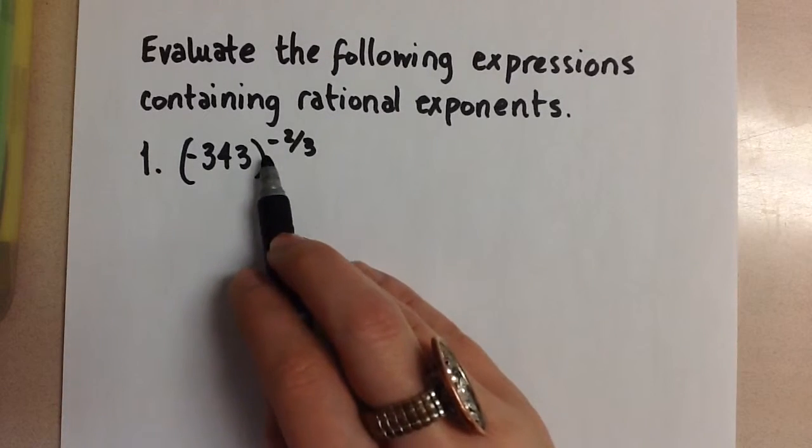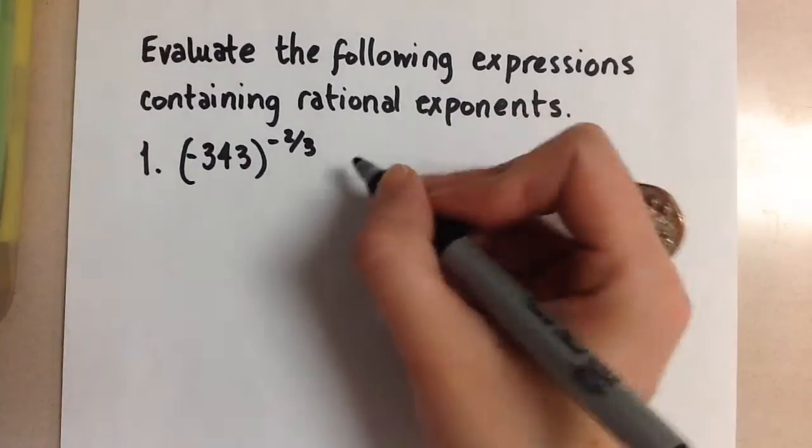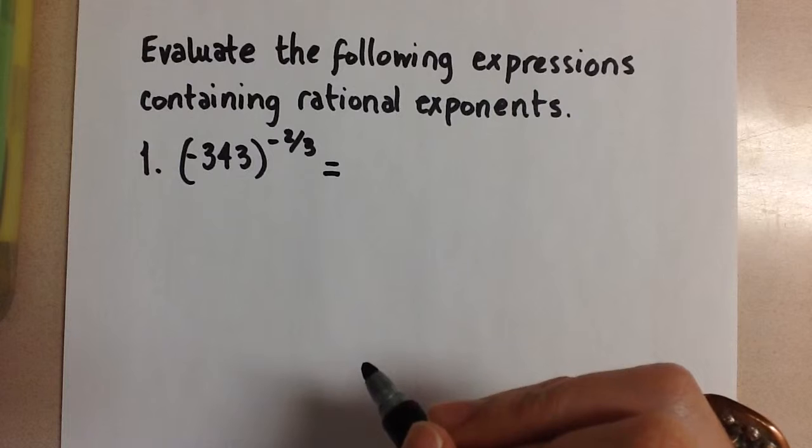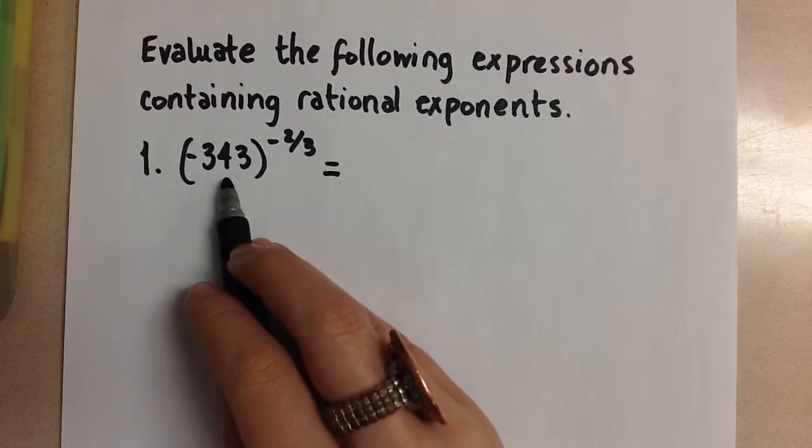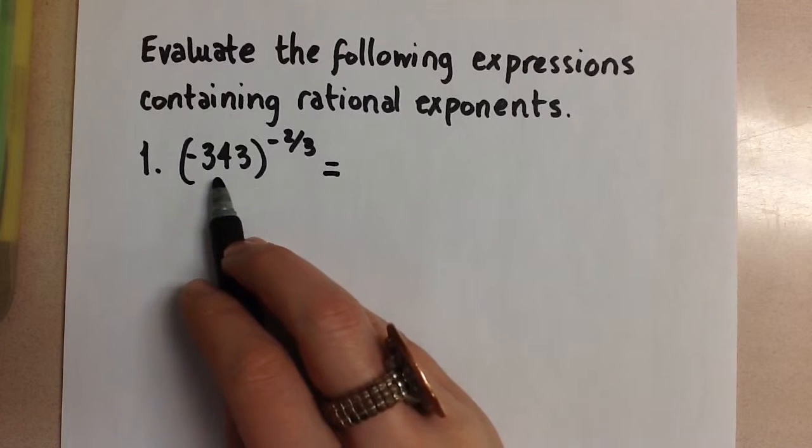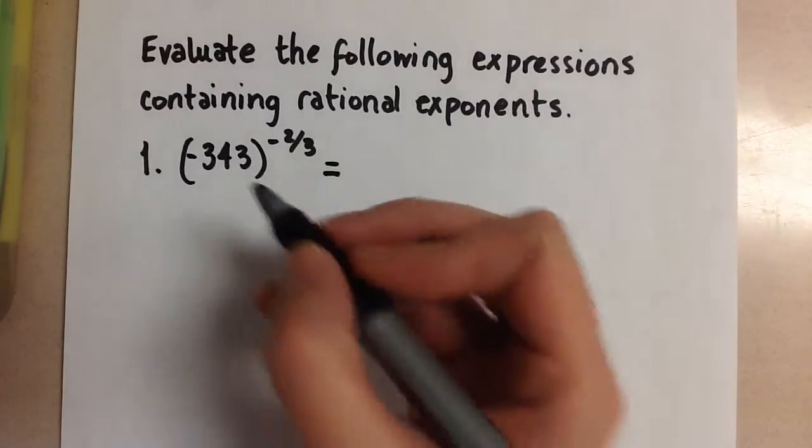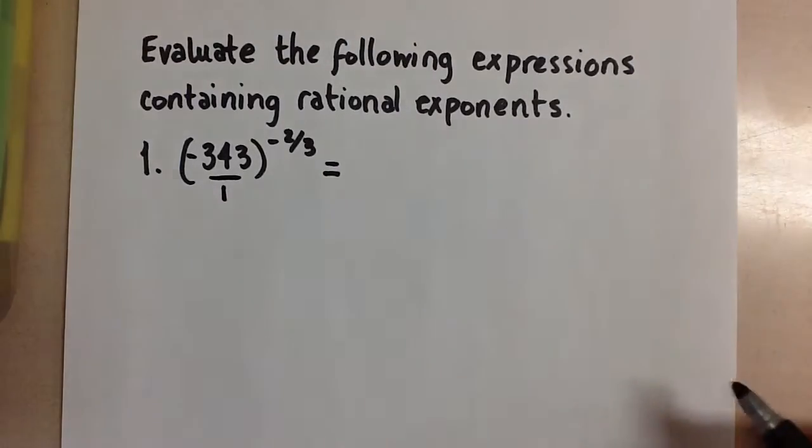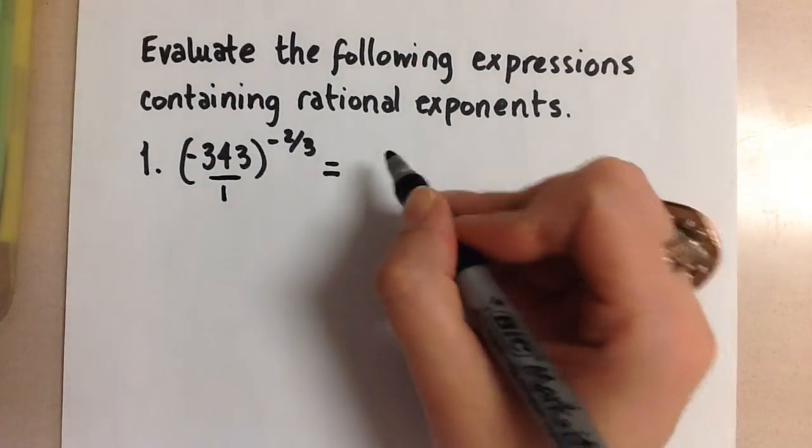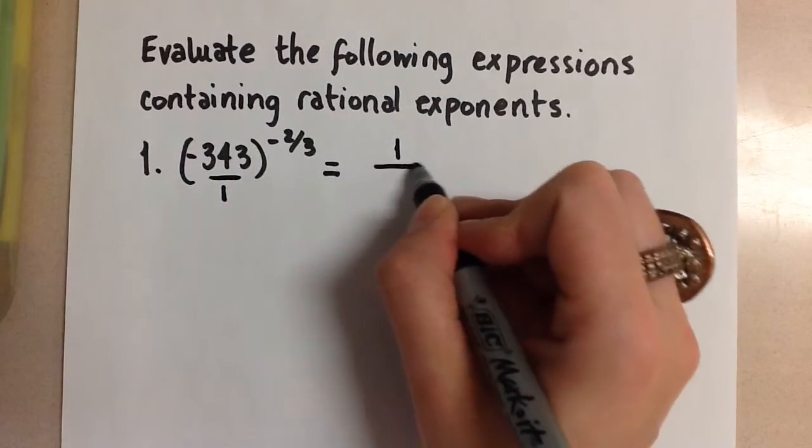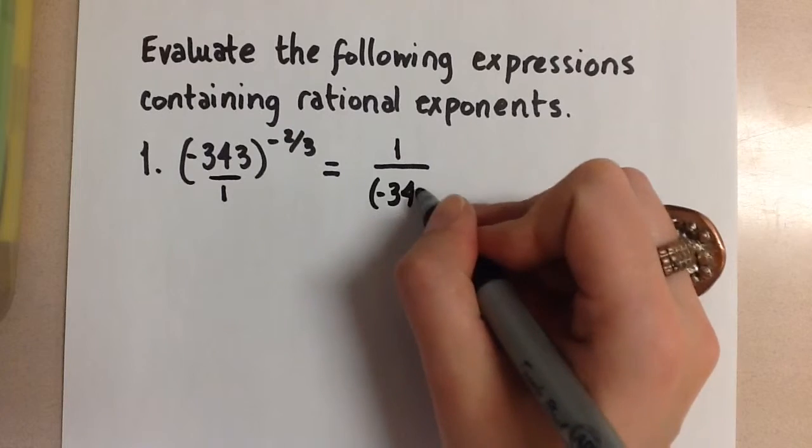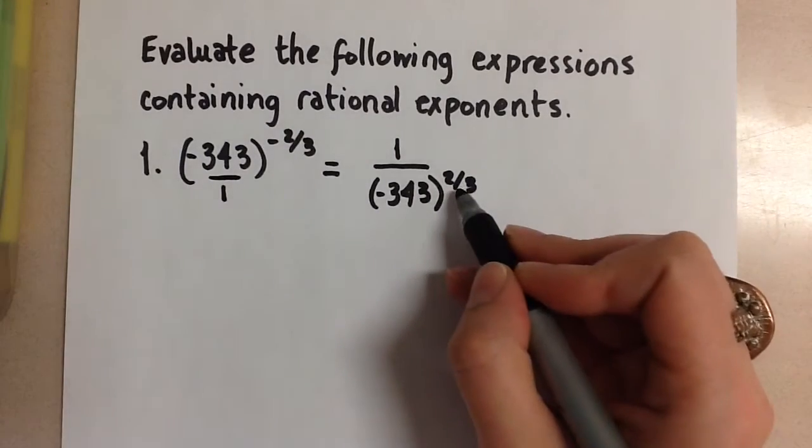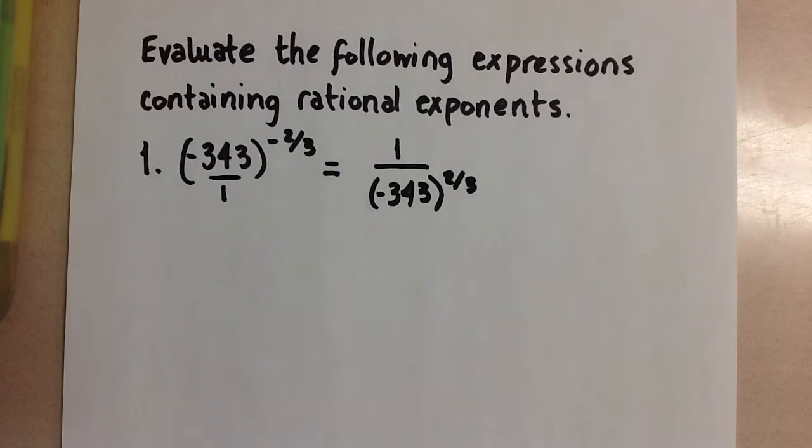First, we're going to take care of this negative exponent. Whenever you have a negative exponent, that means we're going to take the reciprocal of the number. The reciprocal here—it's not a fraction, but remember we can imagine this is 343 over 1—so the reciprocal is going to be 1 over negative 343 to the power of 2 over 3. Now we've gotten rid of the negative exponent by taking the reciprocal.